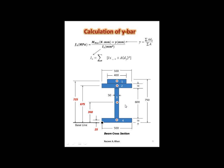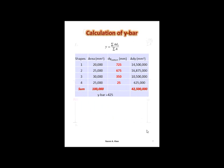The areas are fairly simple to calculate. 400 times 50 gives 20,000. I'm going to set up the y-bar information in a table form. All the areas are listed here for shapes 1 to 4, and I have the corresponding y-bars right here. The only thing I have to do is multiply these to get my A·dy.